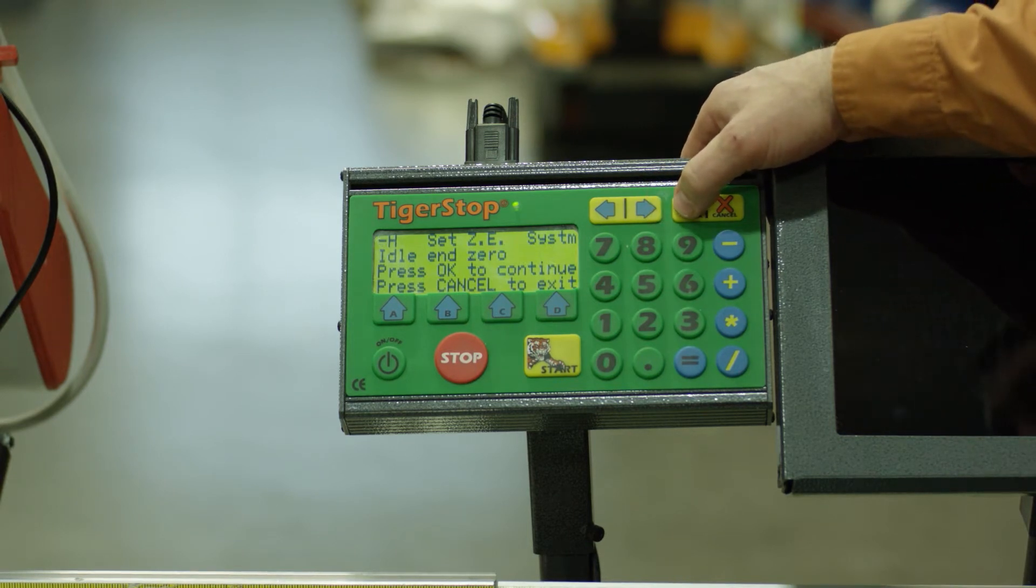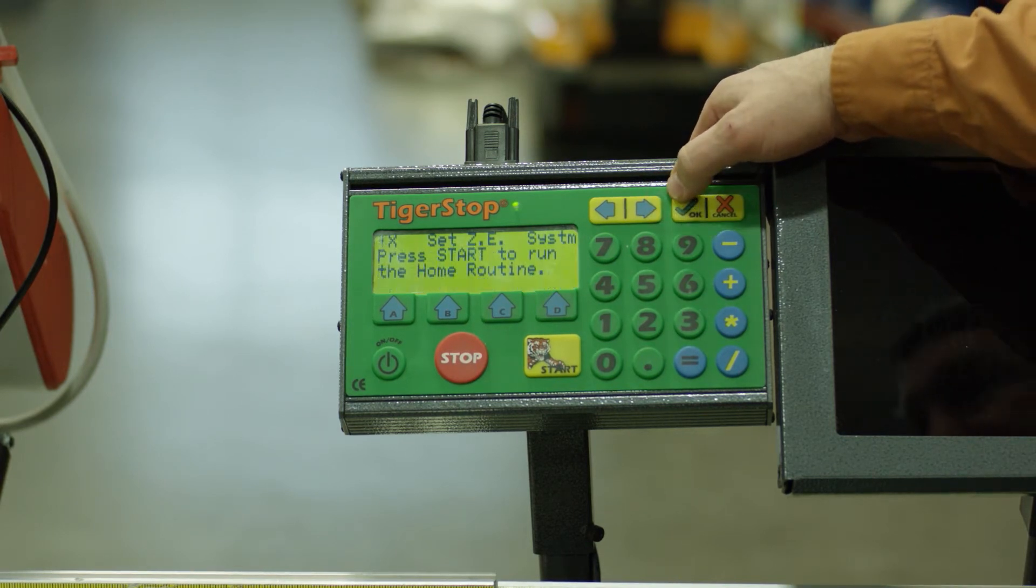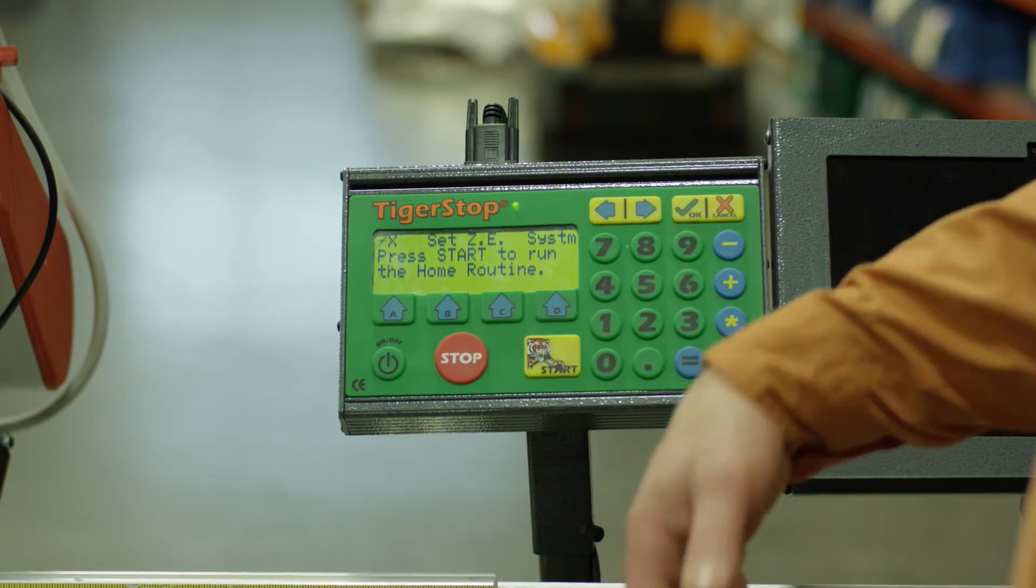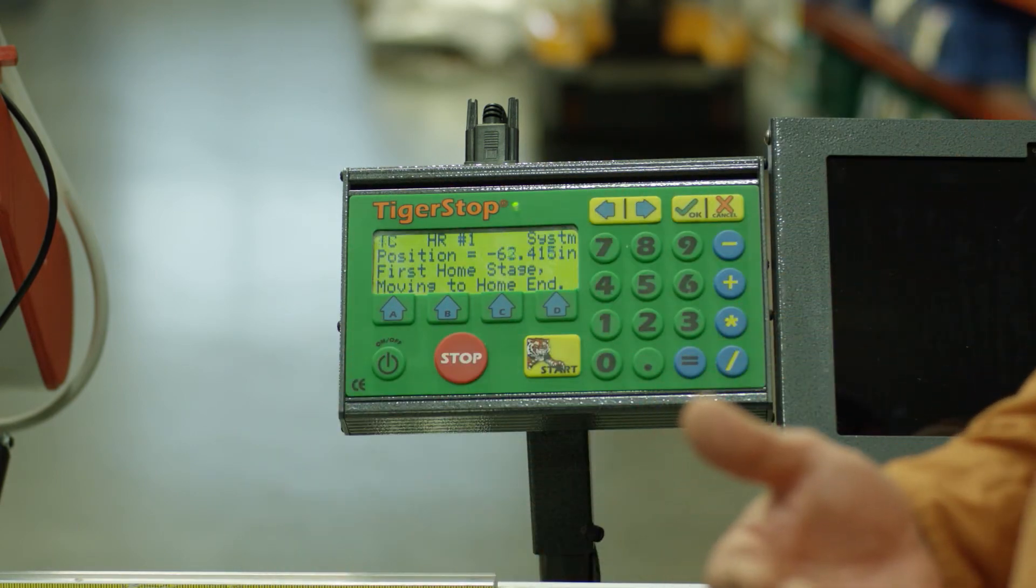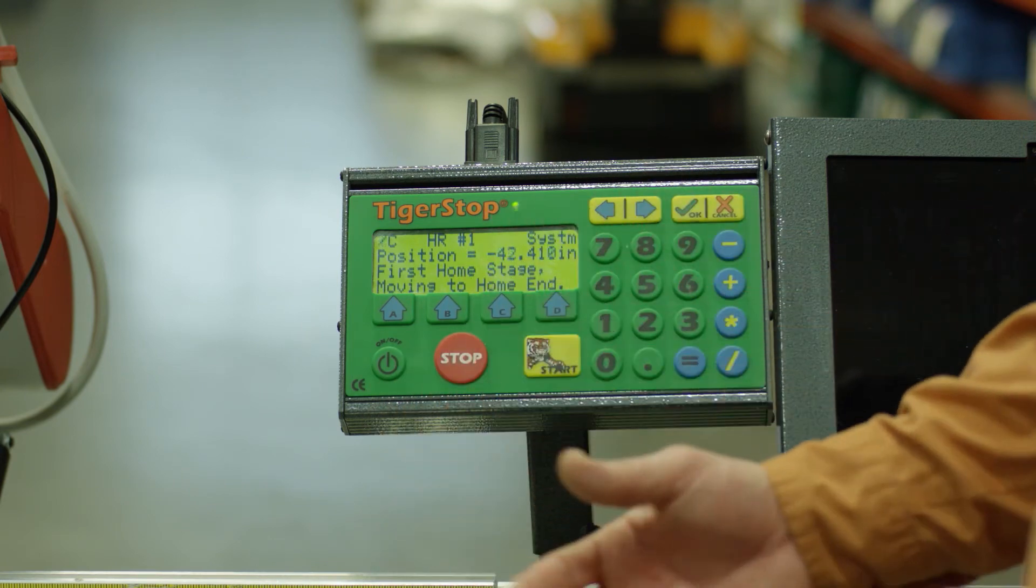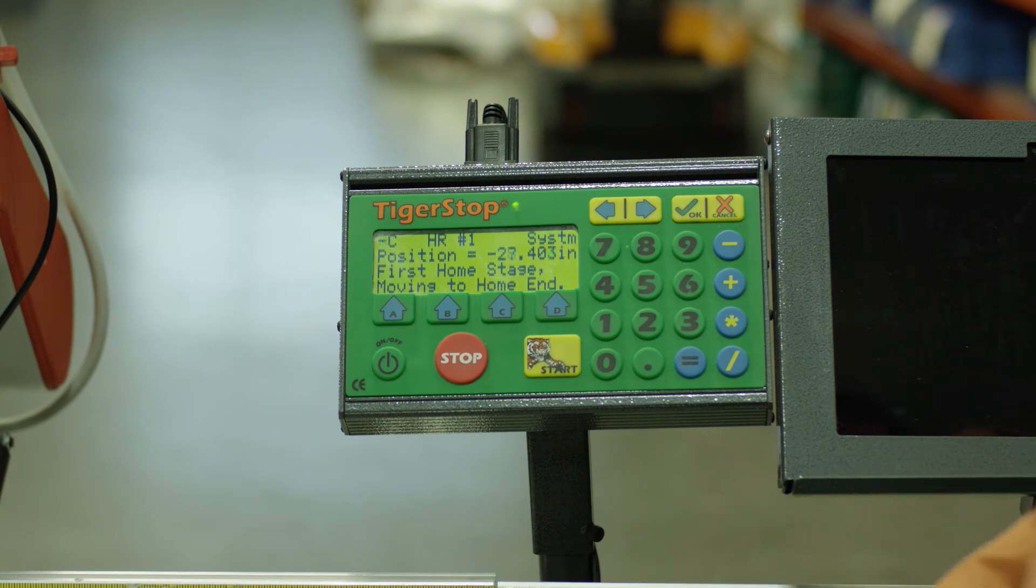Once you've changed it, you want to press OK. It's going to ask you to press the start button. You can do that, although it may not do anything at that point. If it does not, you simply need to press stop, restart your machine, and the zero end will change at that point.